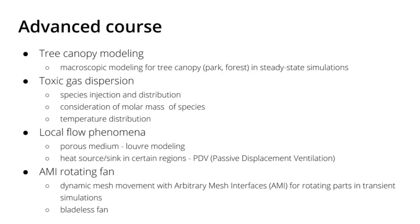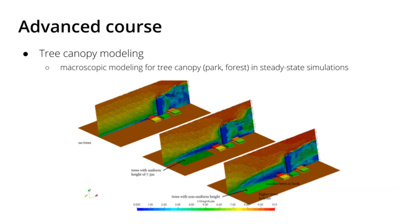For the topics of the advanced course, we will show you how you can model a tree canopy, how you can model the dispersion of a toxic gas, and how you can model local flow phenomena, for example porous media, heat sources and sinks in certain regions, and rotating geometries. For the tree canopy, you can see here on this slide schematically three different simulations. In the second one, in the green area with the boundary, you define a local area where you model the trees macroscopically without actually meshing all the trees. This is very handy if you want to model a park or a small forest in steady-state simulations and study the effects on wind and buildings behind these trees.